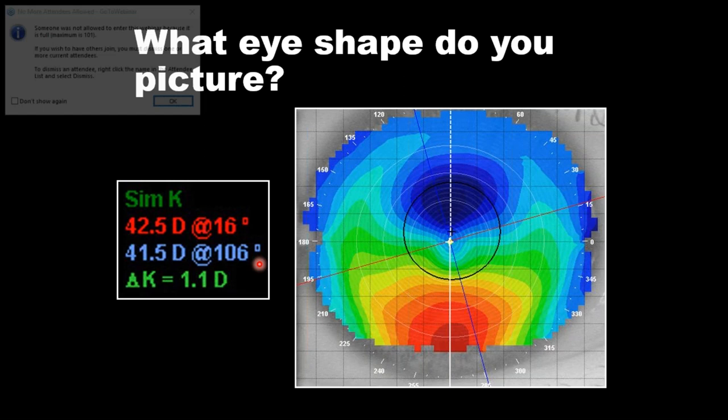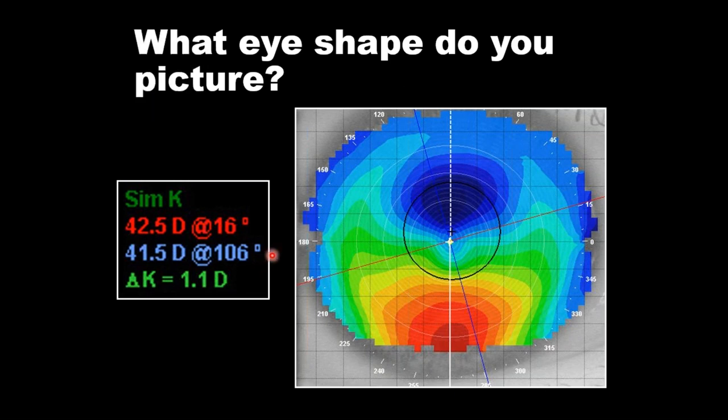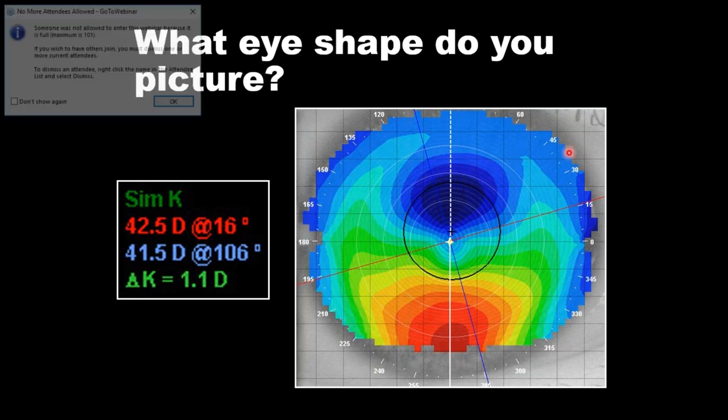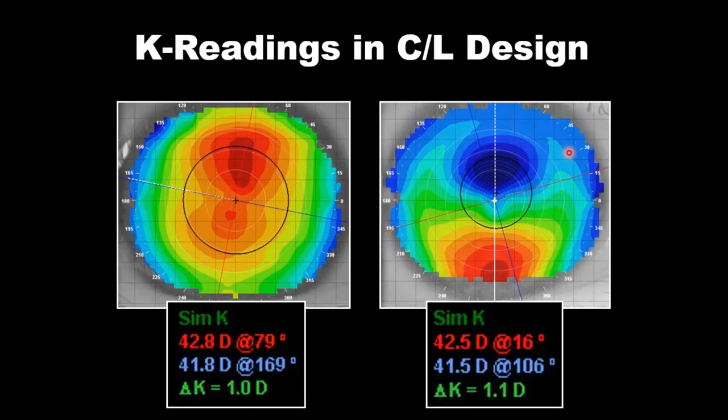K readings would do a very bad job of describing this cornea and the contact lens path we should take. Como pueden ver, esto es una córnea post-cirugía refractiva. La queratometría simulada sola, sin tener la topografía en la mano, nos juzga pobremente lo que está pasando en ese ojo. Uno no se esperaría una queratometría tan sencilla con 1.1 dioptría de una ectasia post-cirugía refractiva.